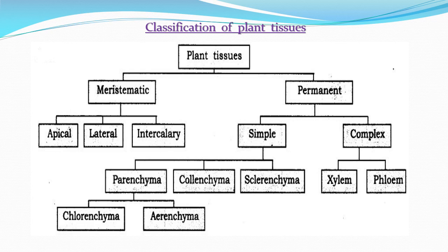Meristematic tissue is a plant tissue specialized to keep on dividing by cell division to form new cells. The plant tissue which is specialized to continuously divide to form new cells is known as meristematic tissue.